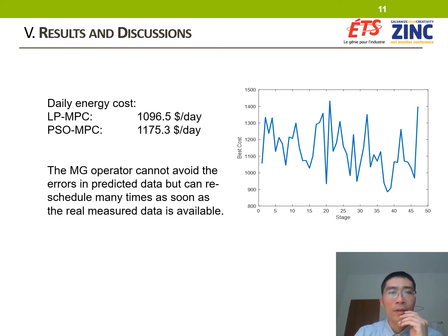The right figure shows the change of the daily energy cost at the MPC stage. It shows the change of the schedule to adapt with the change of the forecast situation. The microgrid operator cannot avoid errors in predicted data, but can reschedule many times as soon as the real measured data is available.